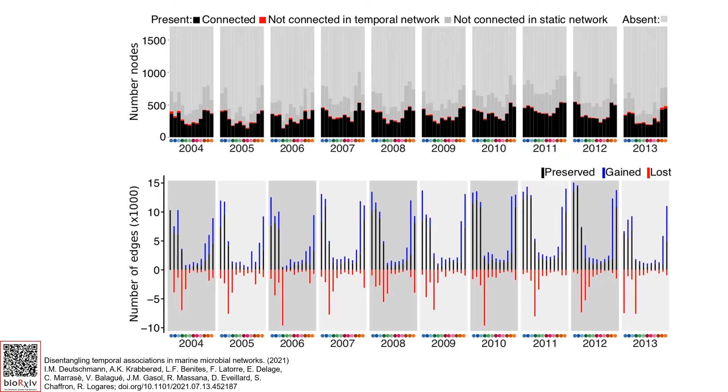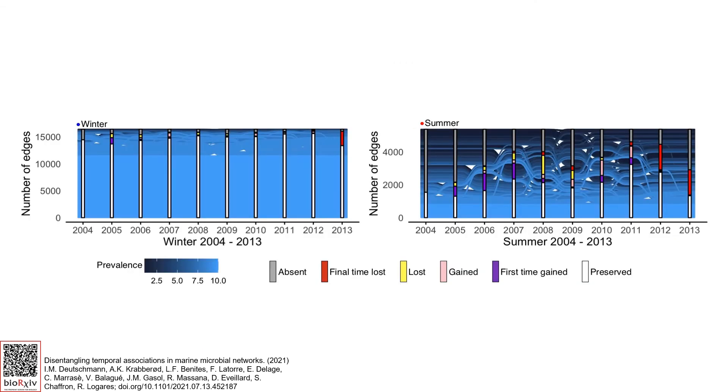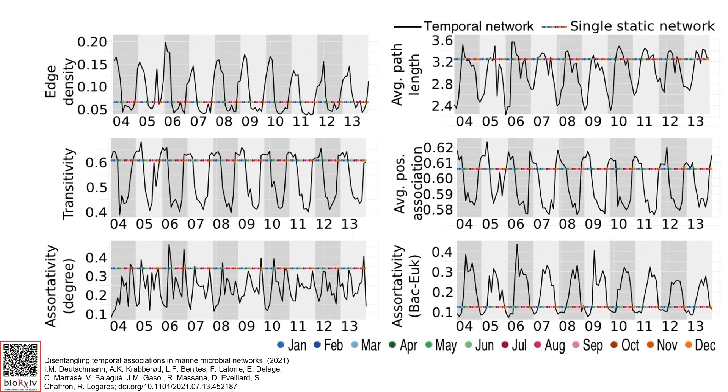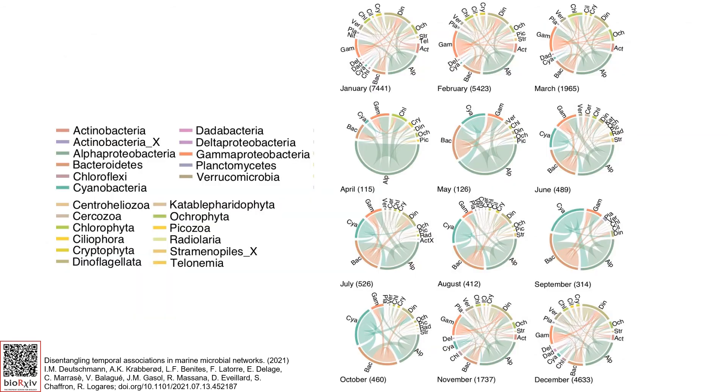Subnetworks were bigger in winter than summer. They were also more repeatable in winter than in summer. The global network metrics showed annual periodicity. And highly prevalent associations changed in time.